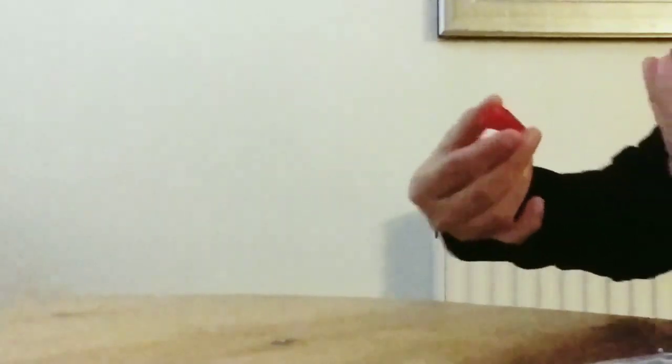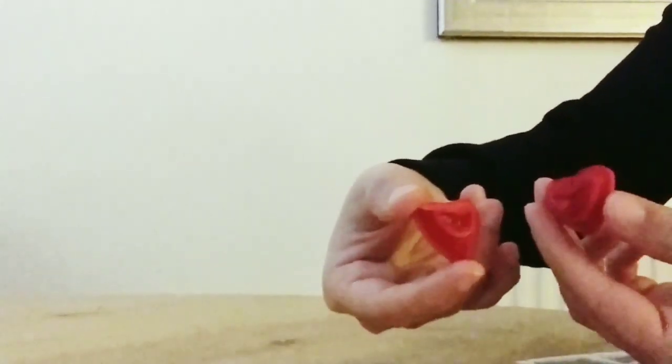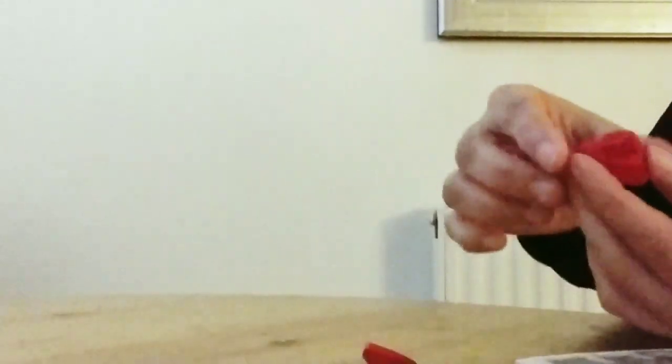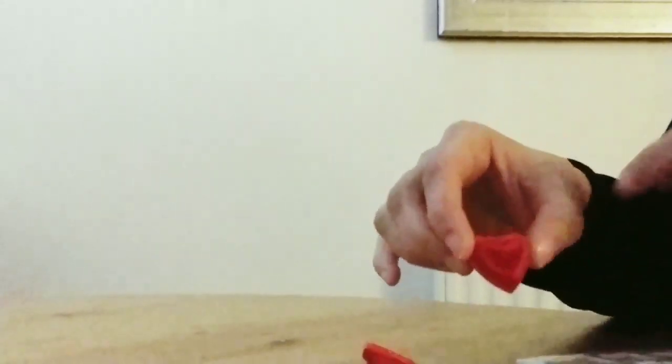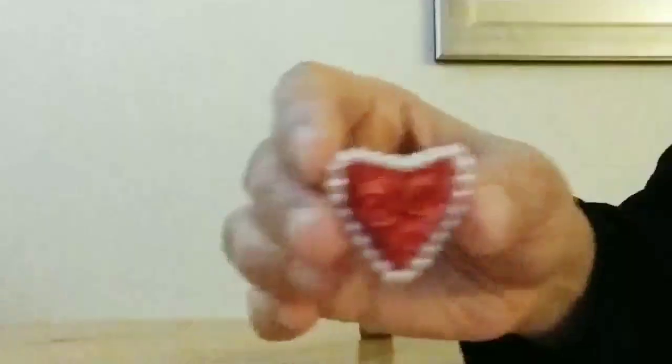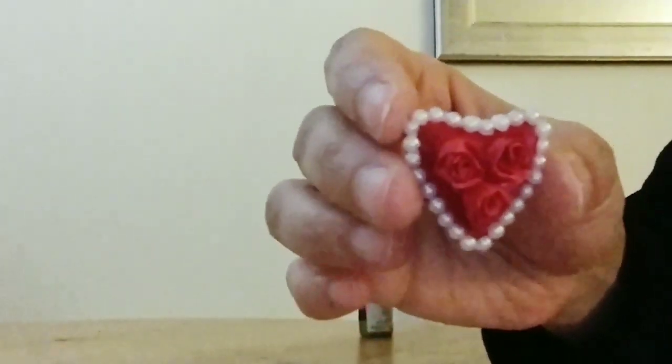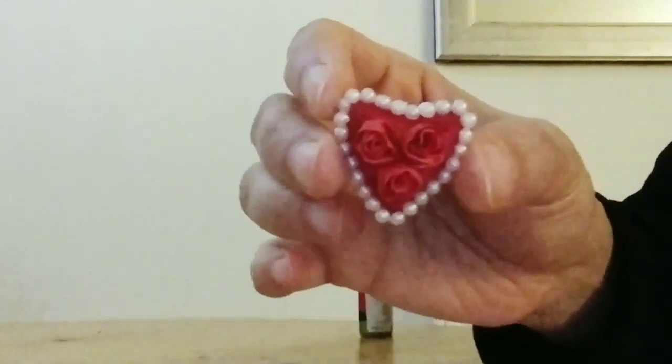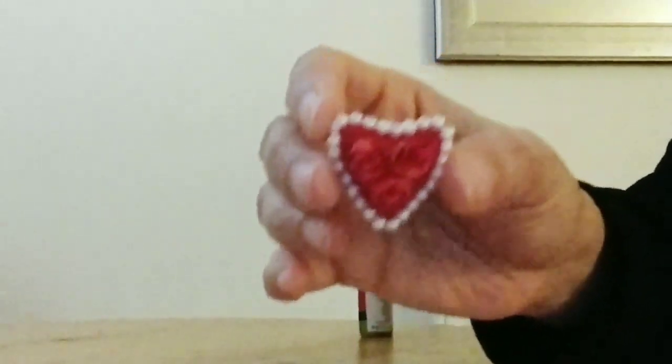So we are going to make 2 such hearts of the same size. Remember using 4 strips of 3mm quilling paper. And I have decorated the heart with pearl chain at the border and roses in the center.